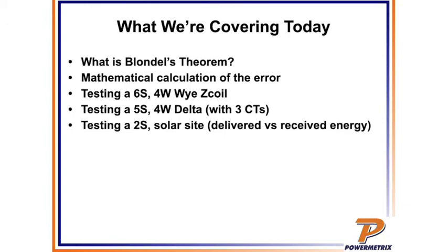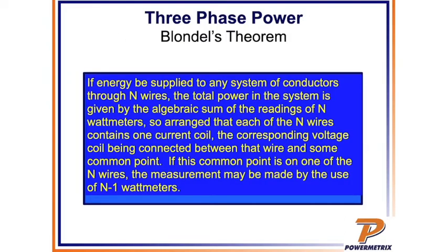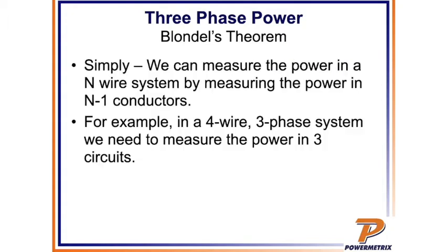Hey everyone. We're going to talk a little bit about what is Blondel's theory? What does it have to honor and what would be a violation of Blondel's theorem? So what the heck is it? So by the letter of the law, Blondel's theorem is if energy be supplied to any system of conductors through N wires, the total power of the system is given by the algebraic sum of the readings of N watt meters. So arranged that each of the N wires contains one current coil, the corresponding voltage coil being connected between that wire and some common point. If this common point is on one of the N wires, the measurement may be made by the use of N minus one watt meters. What does that mean in English? Does anyone understand what the heck that means?